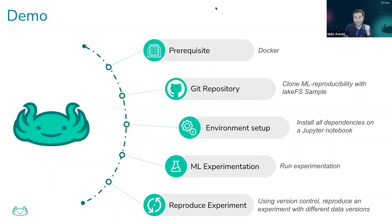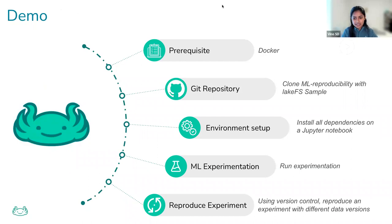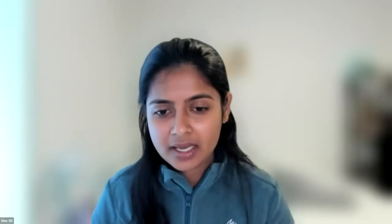Since you already know LakeFS, we can talk about ways to version our data, tag versions with code versions, explore lineage, go back, get reproducibility, and all these cool things. Vino, why don't you walk us through how you're going to show that today? So we've talked enough about the challenges. Now let's see how LakeFS can actually help. In this demo, we'll start with a Docker container where LakeFS and other dependencies are installed. The first prerequisite is having Docker installed on your machine.